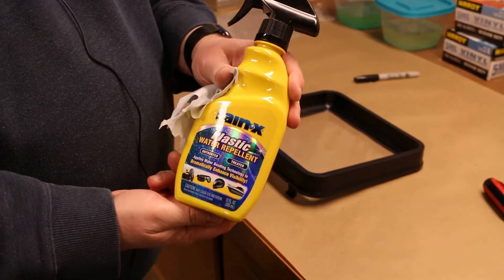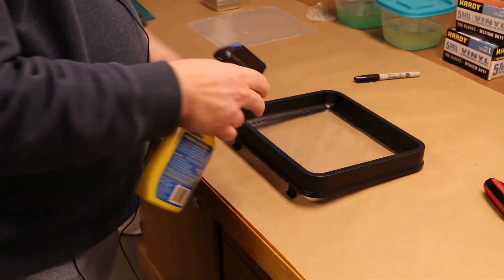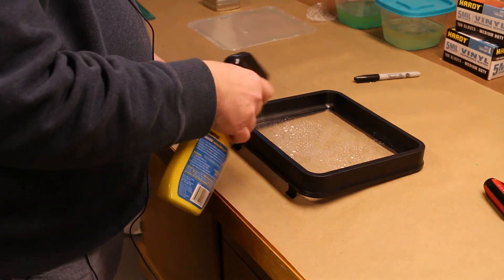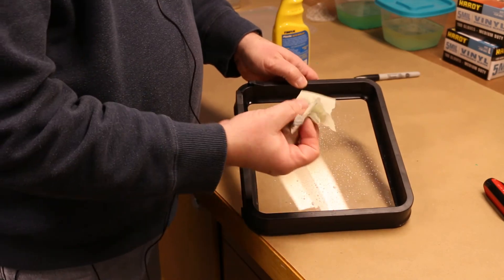And as the final step, I treated the bottom of the vat with Rain-X for plastic. Some people claim this helps the models release from the vat easier. I'm not sure if it does anything. It can't hurt.